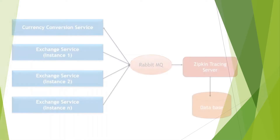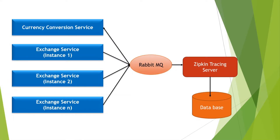Our ultimate goal is to put all the logs in a centralized place for all the microservices. Using Spring Cloud Sleuth, we are assigning a unique trace ID for each request. For all the microservices, if requests are coming from the Currency Conversion Service and going through each and every microservice, all the logs will have to be written into RabbitMQ.